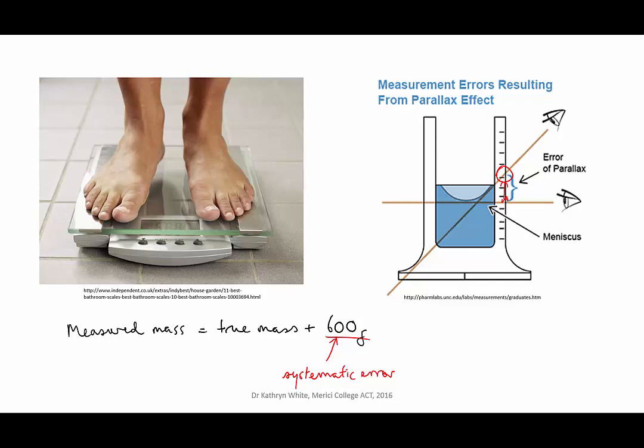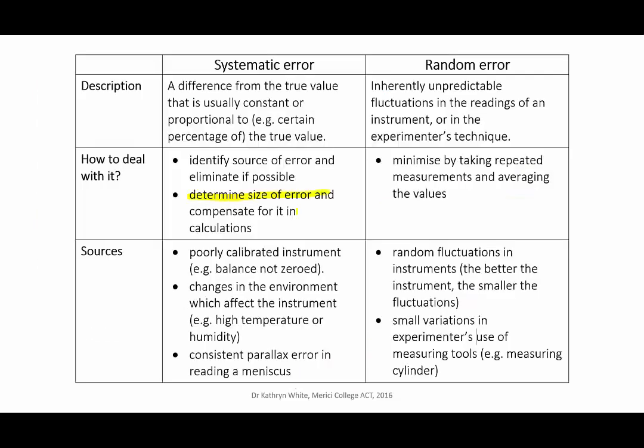So, systematic errors, once you've recognized them, are predictable. In the case of the scales, the systematic error was measured and could be compensated for in calculations.